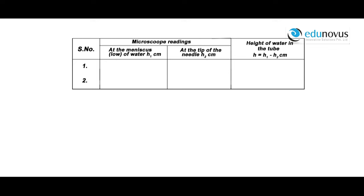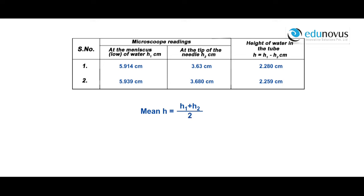The traveling microscope reading when the cross mark is focused on the lower meniscus of the water is 5.914 cm. The reading when focused on the tip of the needle is 3.630 cm. The difference gives the capillary rise h = 2.280 cm. For the second set of readings, mean h = (h1 + h2)/2 = (2.280 + 2.259)/2 = 2.269 cm.